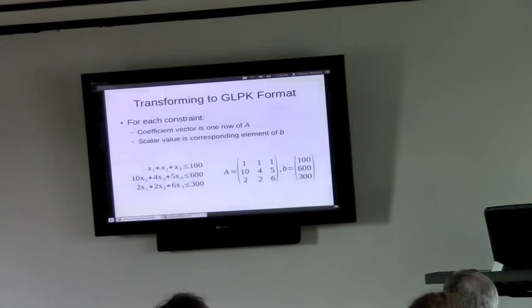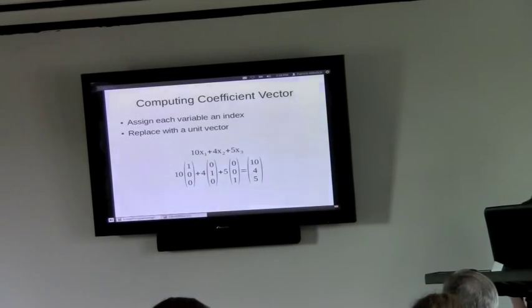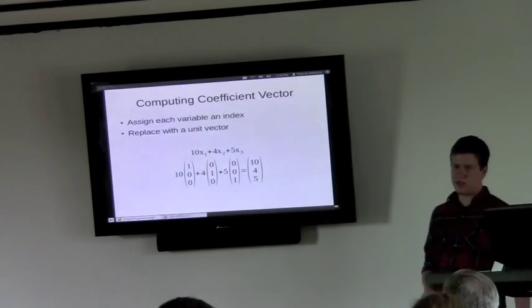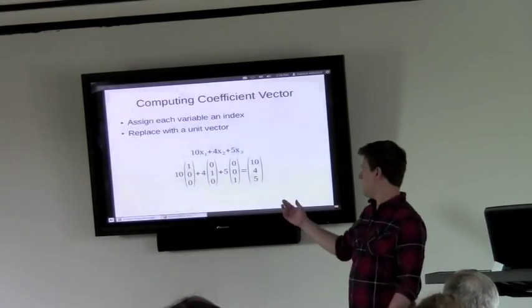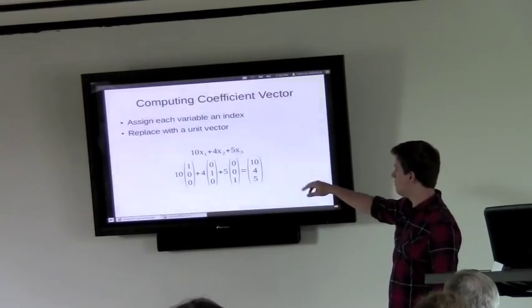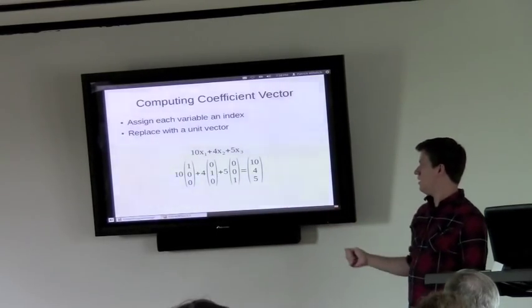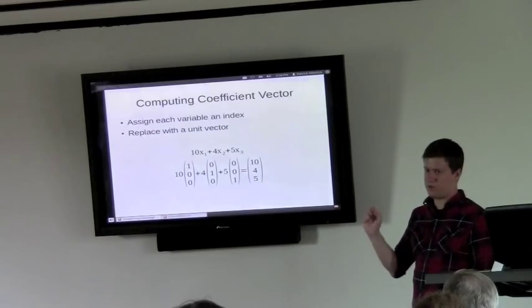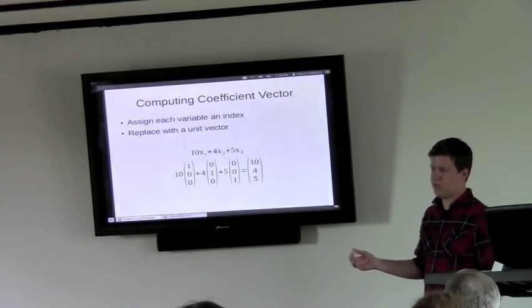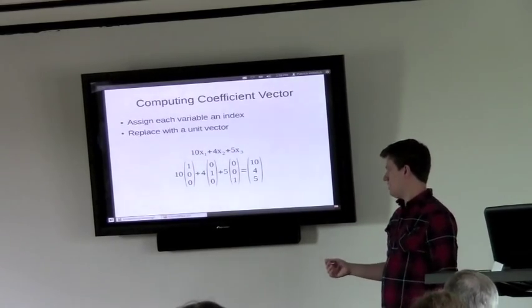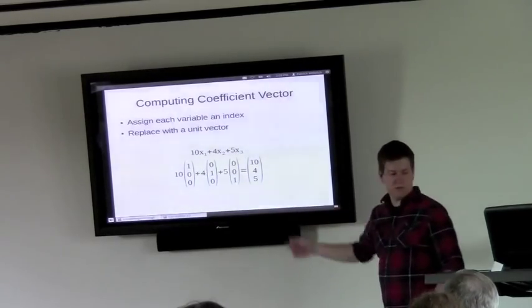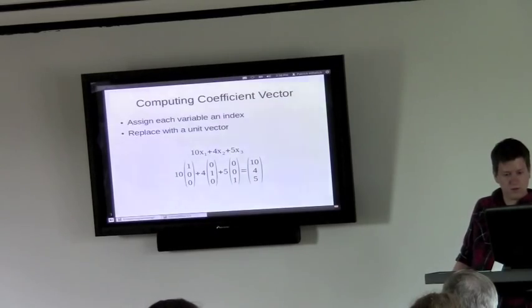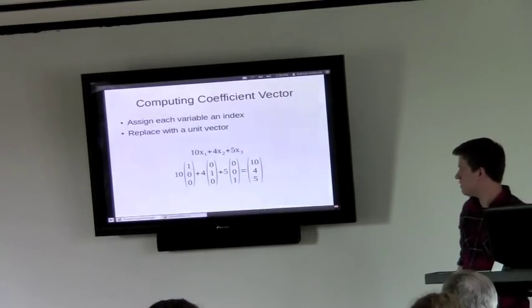So the way that we can compute each row of A is we assign some index to each variable. And then we go through our expression, 10X1, 4X2, 5X3, and replace each variable with the unit vector for the index that we've given it. And so then you add that up, and you get the second row of A, then 4X5.